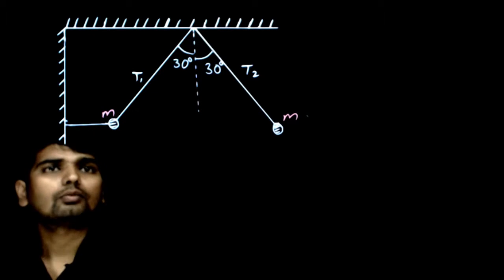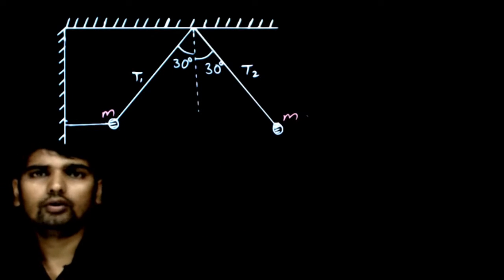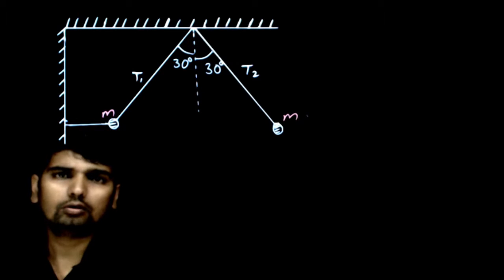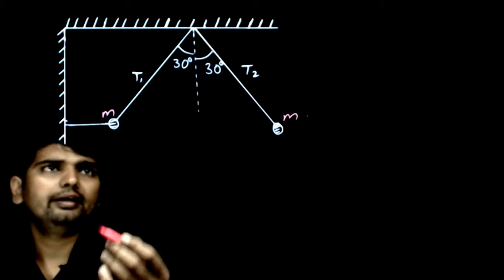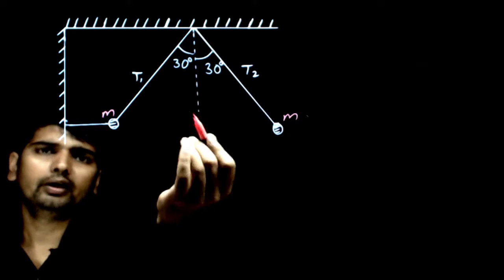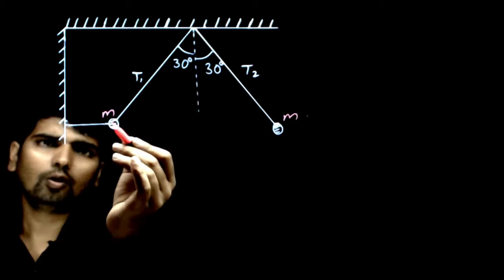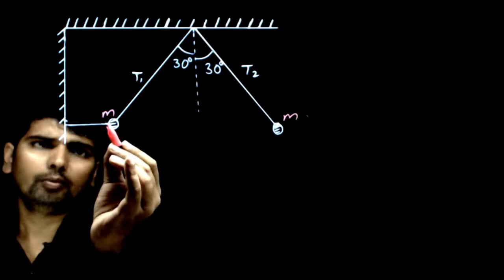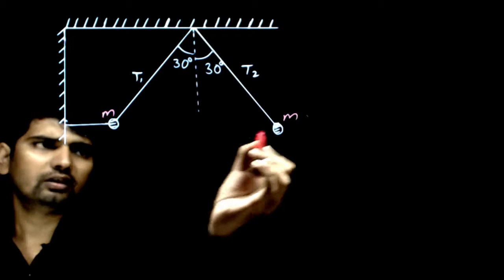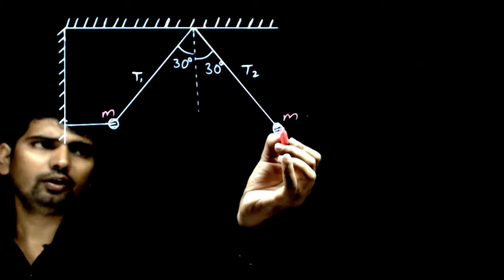In this question, we are given two balls of equal masses, both of them tied with a string making an angle 30 degrees with the vertical, but the first ball is kept in equilibrium by using another string while the second ball is free to oscillate.